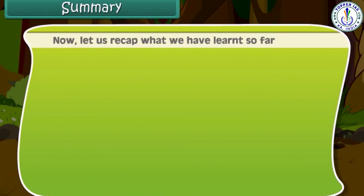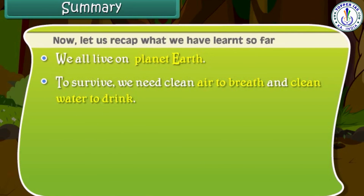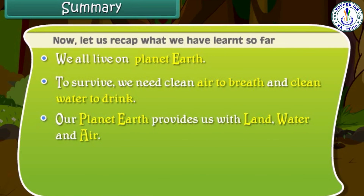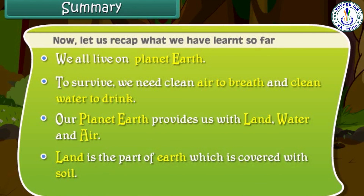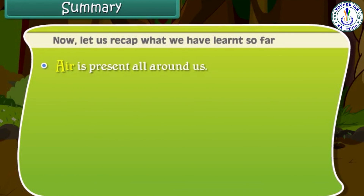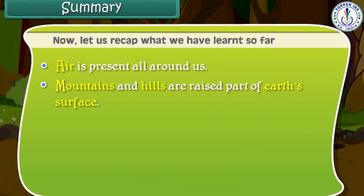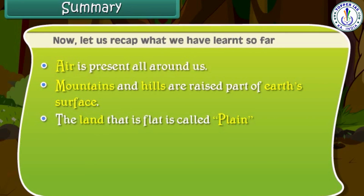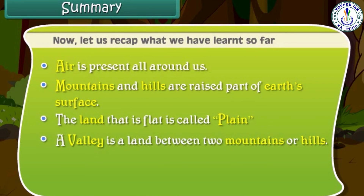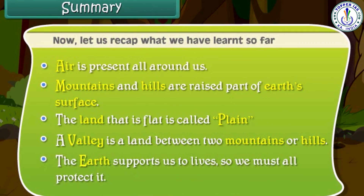Now let us recap what we have learned so far. We all live on planet Earth. To survive, we need clean air to breathe and clean water to drink. Our planet Earth provides us with land, water and air. Land is the part of Earth which is covered with soil. Air is present all around us. Mountains and hills are raised parts of Earth's surface. The land that is flat is called a plain. A valley is a land between two mountains or hills. The Earth supports us to live, so we must all protect it.